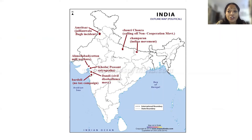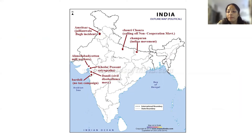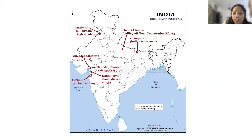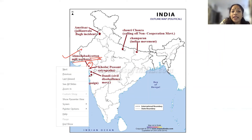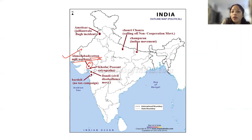Next, very very important — when Gandhiji returned to India, what are the places he went to and the first stages of Satyagraha? They can ask you by the type of movement also. For example, they can ask: the place known for the cotton mill workers' Satyagraha. The answer is Ahmedabad — it's written cotton mill worker in the bracket, but the answer is Ahmedabad.